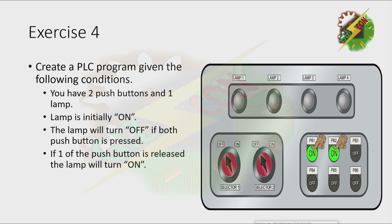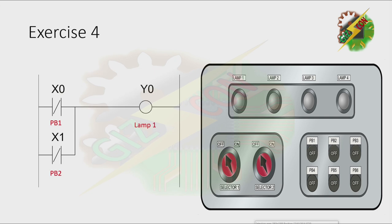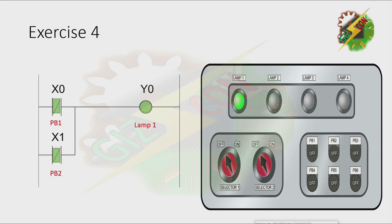This is the answer for this exercise. As you can see, there are two parallel contacts, X0 and X1. And because they are normally closed, that will cause Y0 or the lamp to turn on. Now when I press PB1, nothing will happen, because as you can see they are in parallel. When I release PB1, nothing will happen also. When I press PB2, nothing will happen again. But when I press both push buttons, the lamp will turn off. Okay, this is the answer for this exercise.